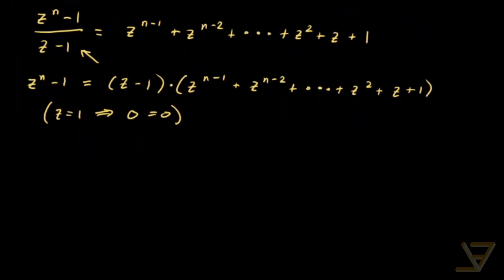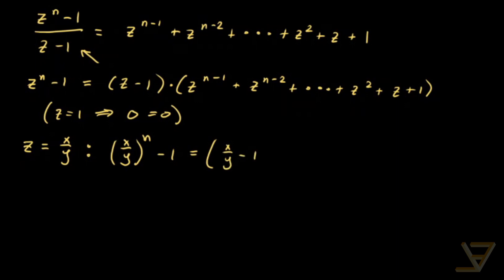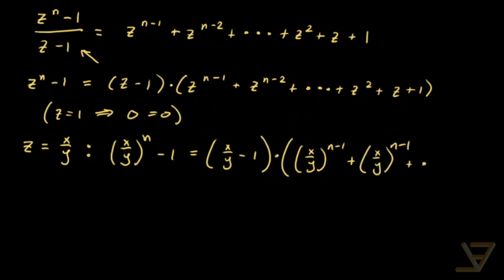The trick is to substitute in for z the value x over y. What we get then is that x over y to the n minus 1 is equal to x over y minus 1 times x over y to the n minus 1 plus x over y to the n minus 2, all the way through to x over y squared plus x over y plus 1.